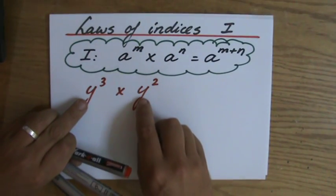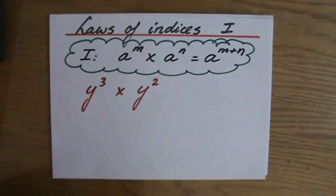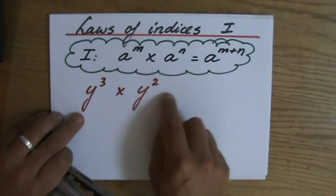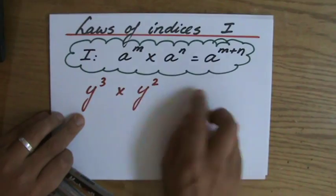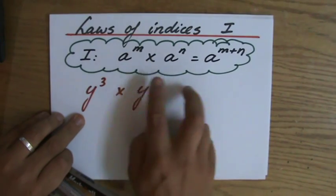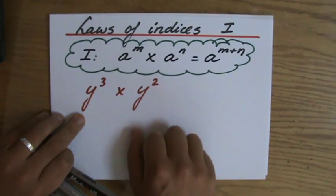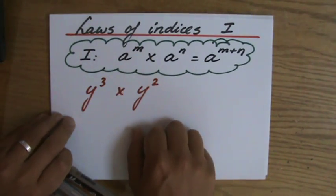Now, is the base the same? Absolutely, it's the same. So the answer would be y to the power 3 plus 2, so y to the power 5.